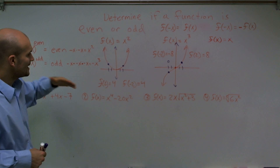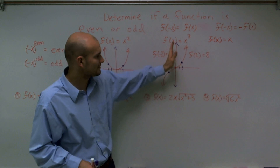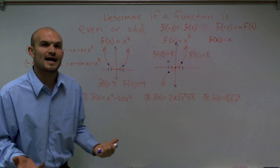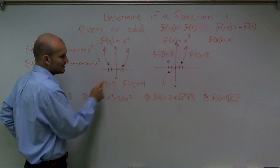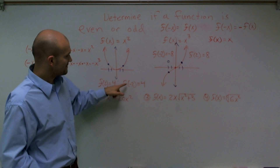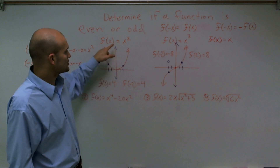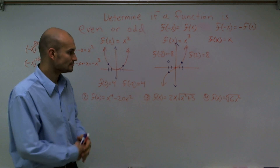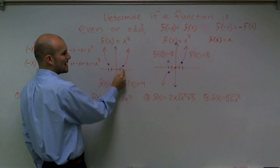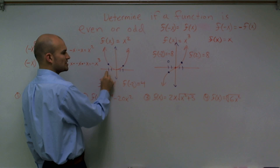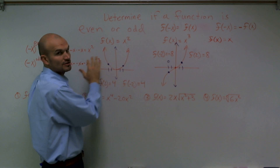Let's use some numbers. I've already told you x squared is even and showed you graphically why, and showed you graphically why x cubed is odd. Let's look at the algebraic answers. If f of 2 equals 4, then if I plug in the negative version — f of negative 2 — I'm still going to get 4, which means I get the exact same answer. If I plug in the negative version and still get the same output value, you can see how these graphs are always going to be symmetrical.